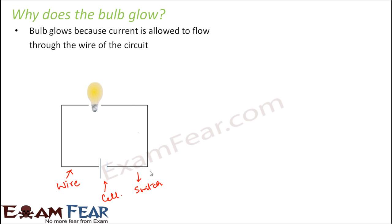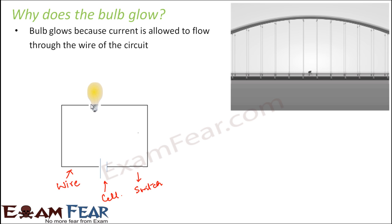Even if the circuit is complete, if the wires do not allow current to move through them, the bulb will not glow. To understand this better, consider the bridge analogy: the bridge is intact — the path is there — but the surface is very slippery, covered with oil and water, which prevents the cyclist from riding over it and reaching the other side.